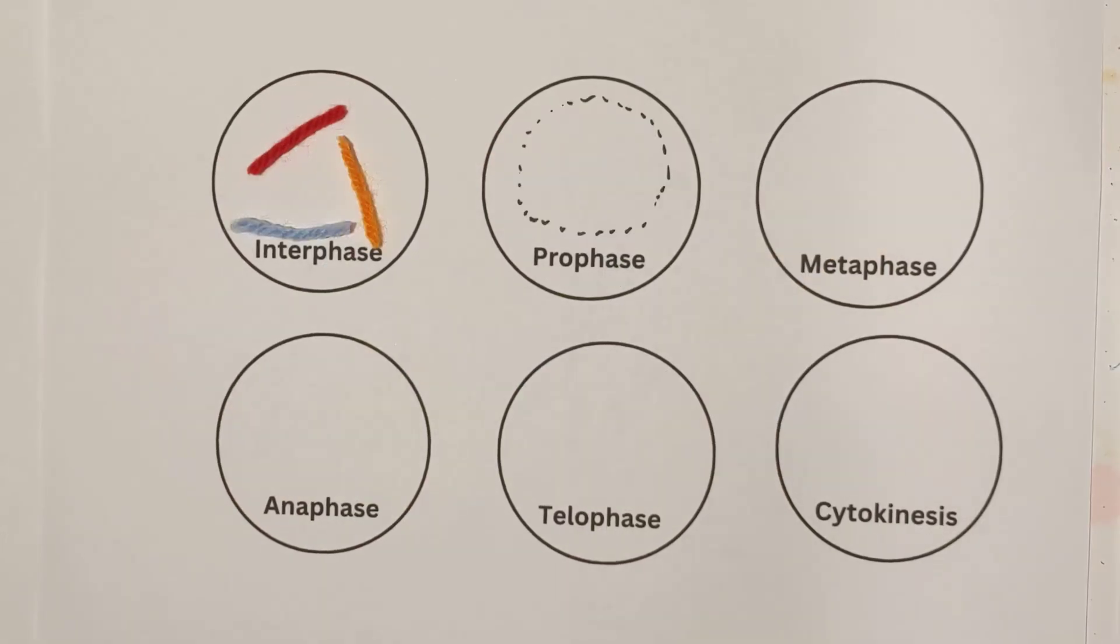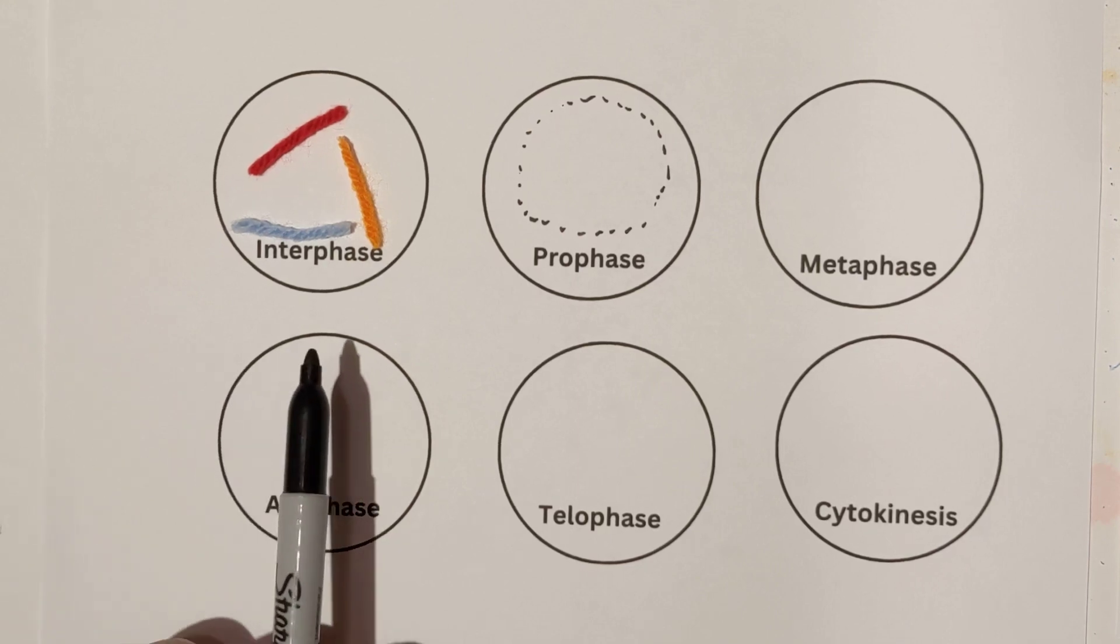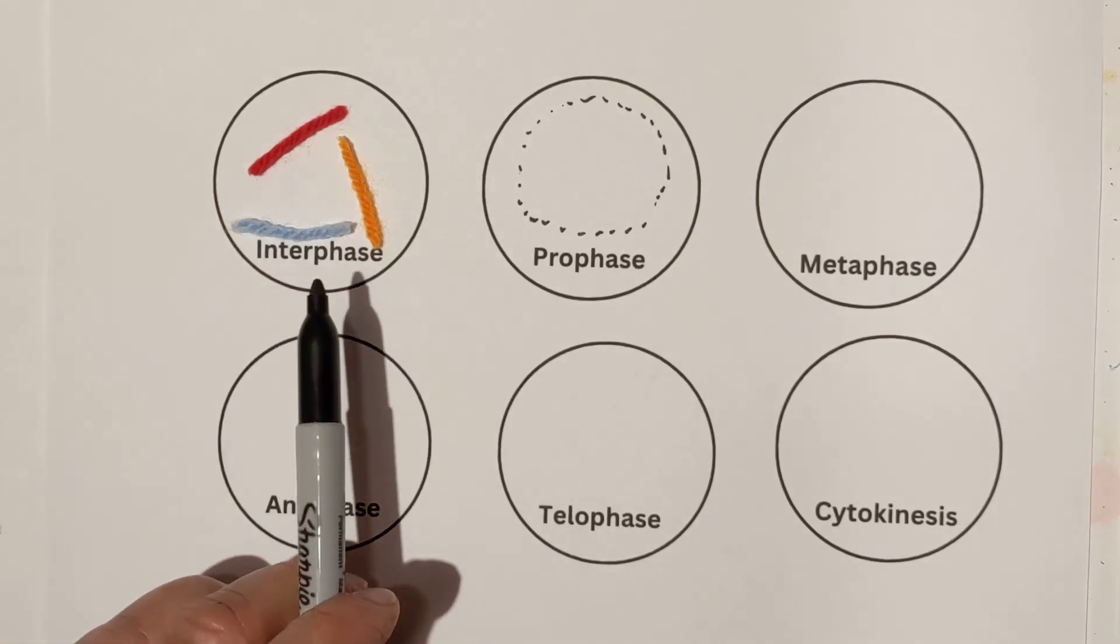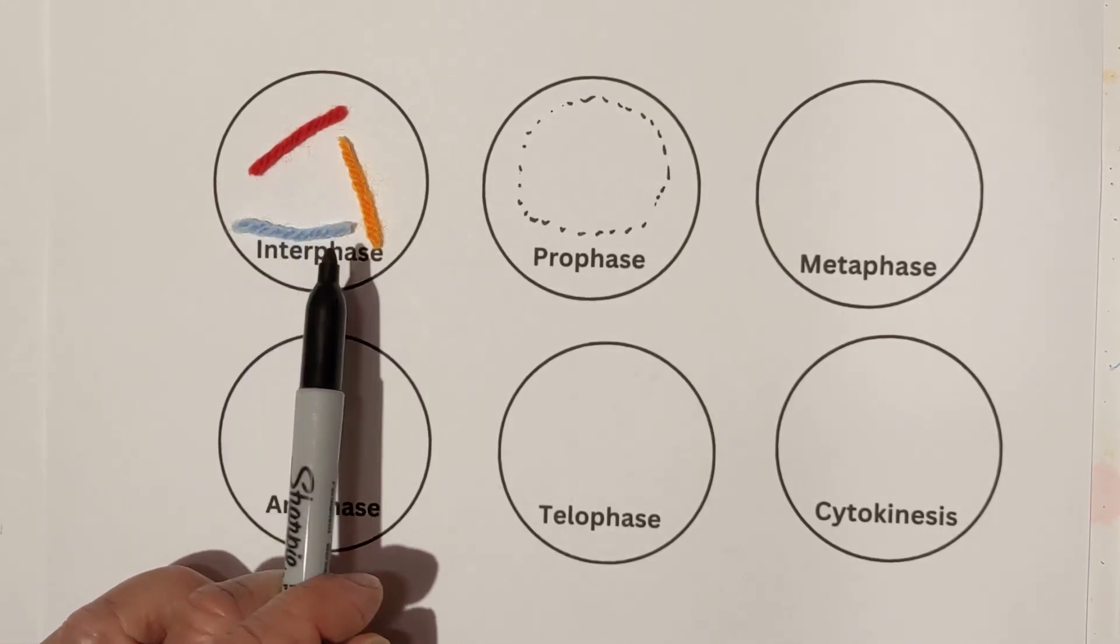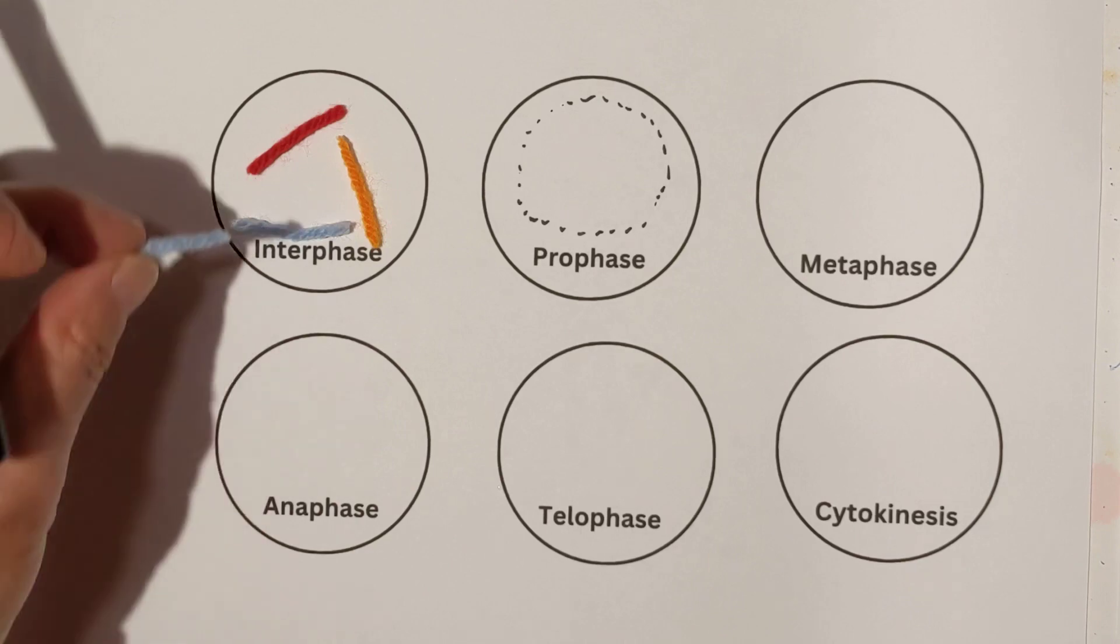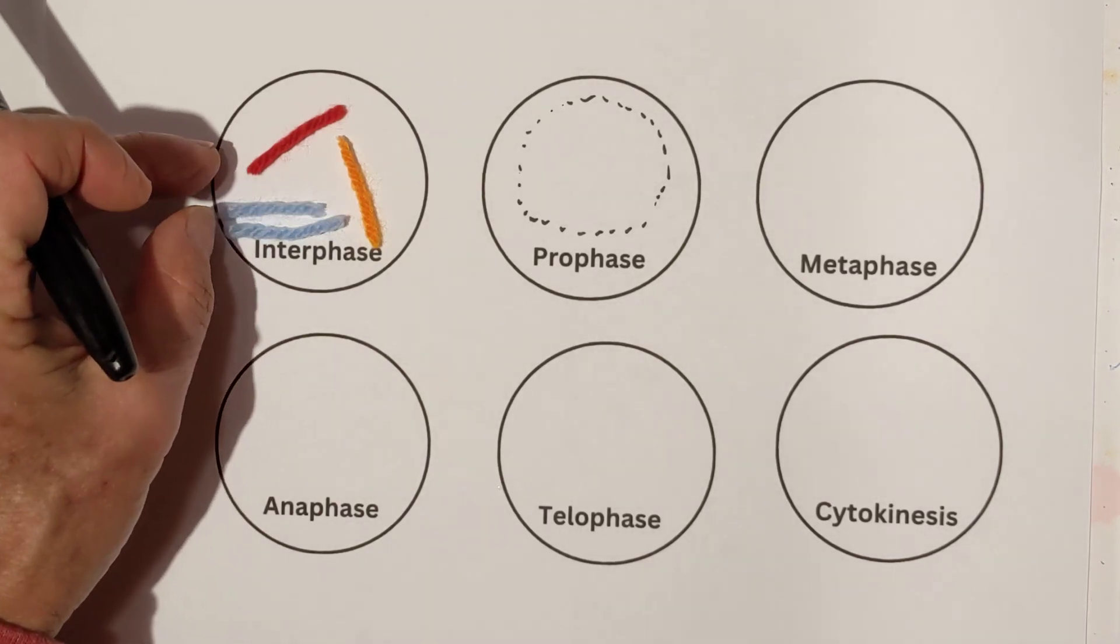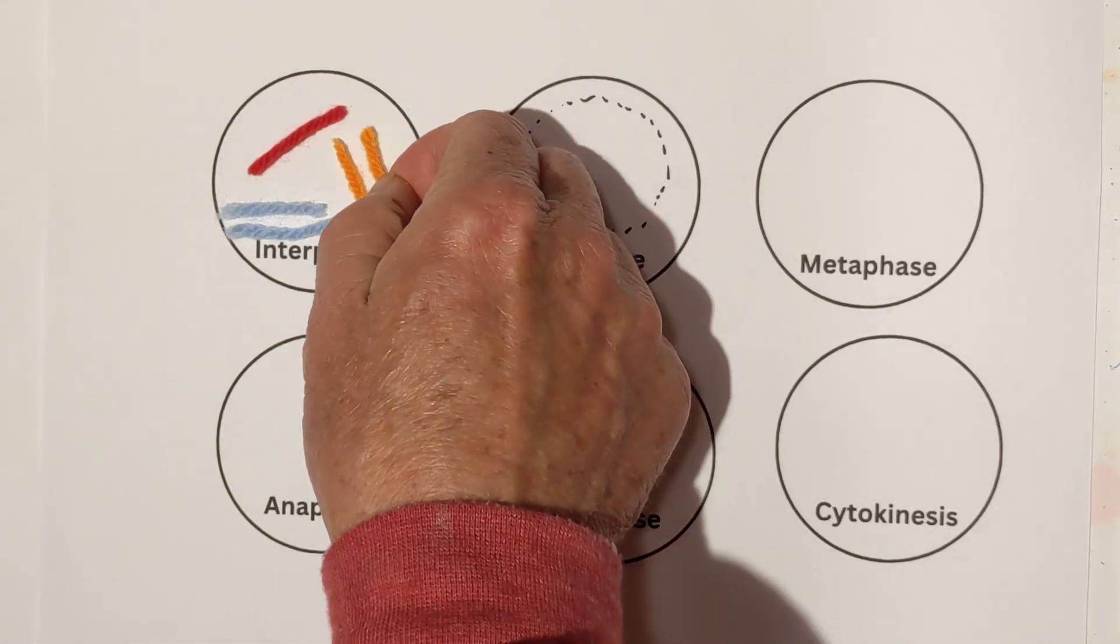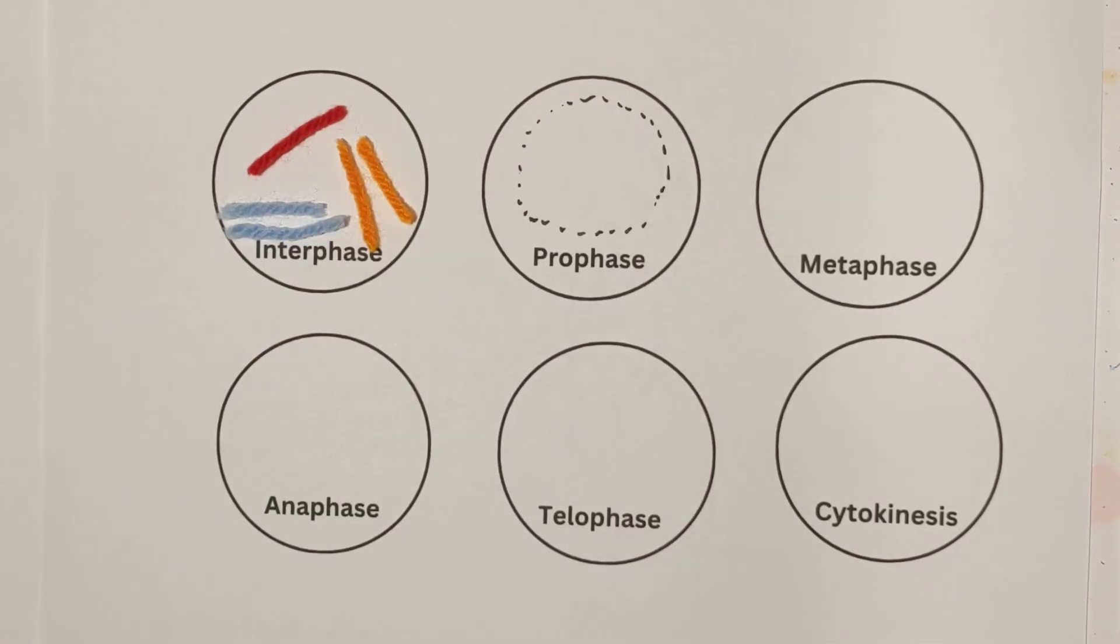Okay, before mitosis can begin, the cell spends the bulk of its time in interphase. And during interphase, it's carrying on normal activities. It may grow a little bit. But one of the very important things that happens during interphase is that the DNA, which is not coiled up, if you were to look at this in a microscope, you would not see this, is that they make a copy of itself, an exact copy of itself.